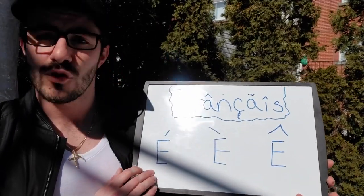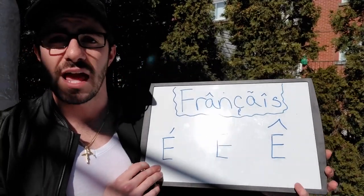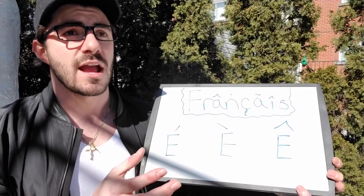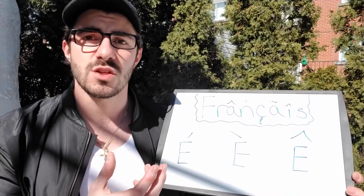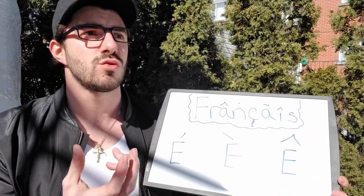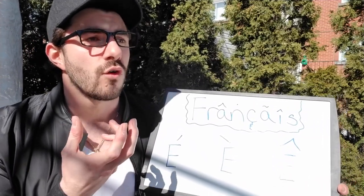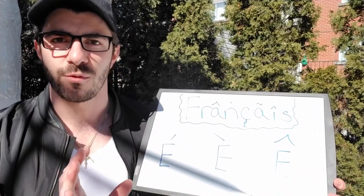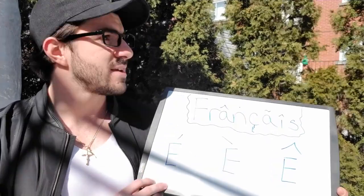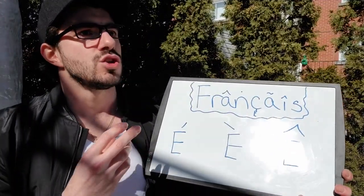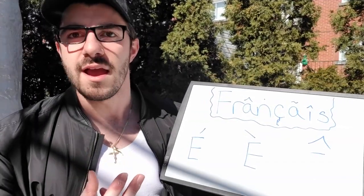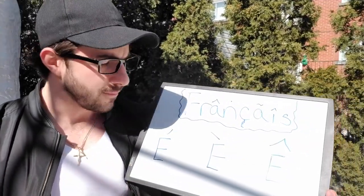So the first one is called the accent aigu. That sounds like E, and you mainly use it when you're like conjugationing verbials. I'm gonna give you an exemplification. Basically it's like, j'ai été à mon bas.